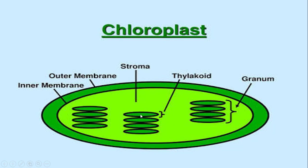There are two types of photosystem: photosystem 1 and photosystem 2, and both capture sunlight energy. We have two types of photophosphorylation. One is called cyclic photophosphorylation, which requires only photosystem 1. Another is called non-cyclic photophosphorylation, which requires both photosystem 1 and photosystem 2.